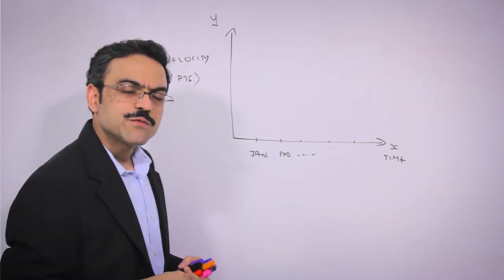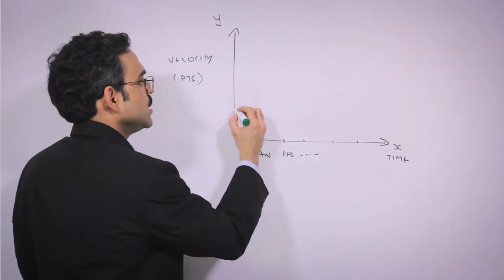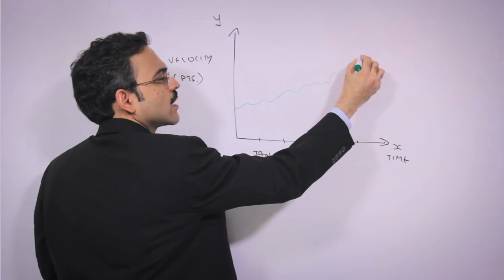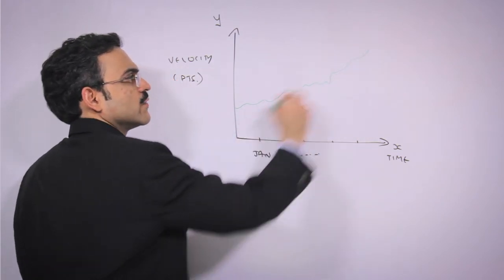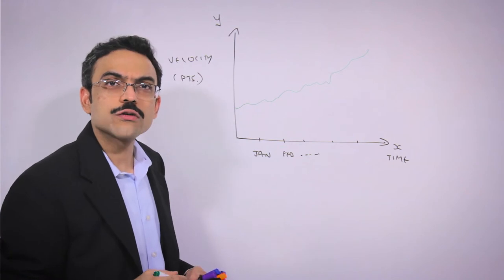Many times executives make the mistake of comparing velocity across teams. What they want is to see a graph like this where the velocity of a team is steadily increasing quarter over quarter.